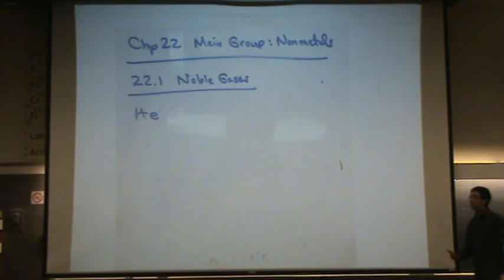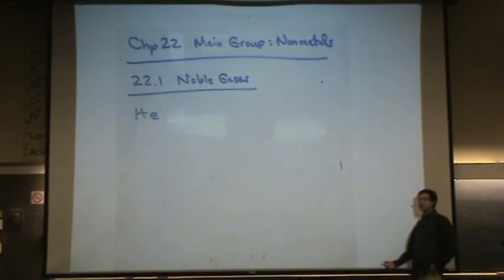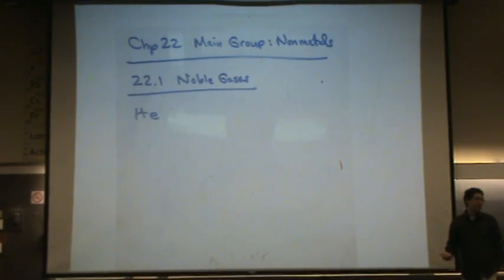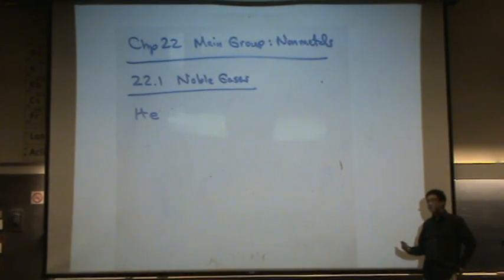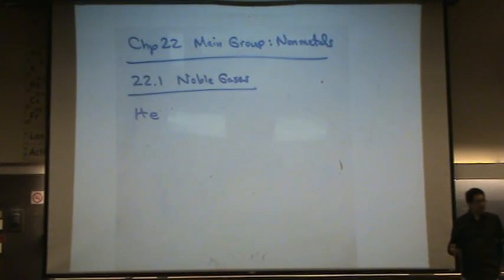It's a diluent. What that means, it dilutes various potential flammables. So for example, you might have helium when you go scuba diving to dilute the oxygen. So if there's some sort of accident, it might not be as explosive. So it can be used as a diluent.